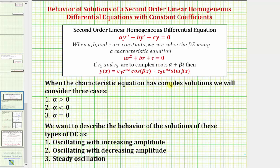And we'll consider three cases: when alpha, the real part, is greater than zero; when alpha is less than zero; and when alpha equals zero. And we'll be describing these solutions using three classifications: oscillating with an increasing amplitude, oscillating with a decreasing amplitude, or steady oscillation.